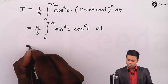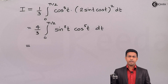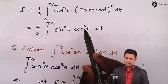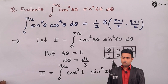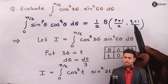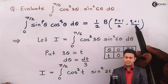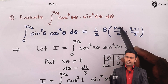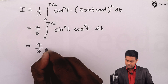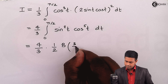Now we solve this integral using the beta function definition. Here p = 2 and q = 5. Substituting: (p+1)/2 = 3/2 and (q+1)/2 = 3. So we get I = (4/3) · (1/2) · β(3/2, 3) = (2/3) · β(3/2, 3).